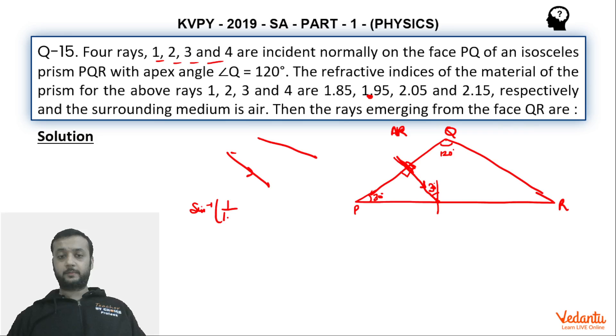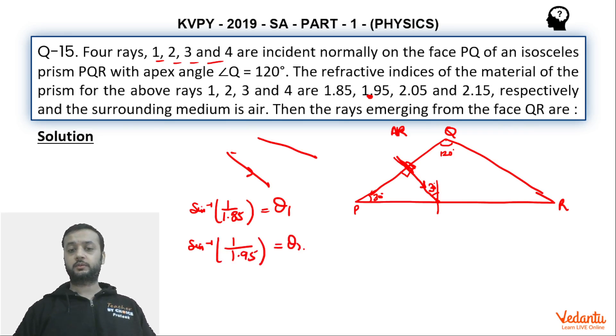Toh ab dekhte hai kaunsi rays ka critical angle 30 se chota hai. Toh first ray ka critical angle kitna hoga? Sine inverse 1 upon 1.85, this is theta 1. Theta 1 means critical angle of ray 1. Second ray ka critical angle 1 upon 1.95. This is theta 3 and similarly sine inverse of 1 upon 2.15, this is theta 4.